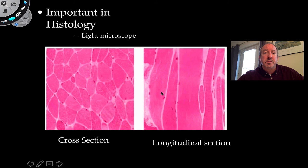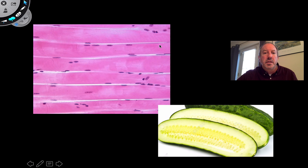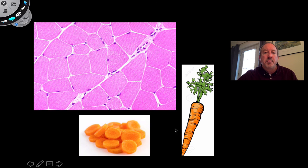In histology, if you're looking at muscle tissue, you need to know which cut you're viewing. A cross-section of muscle looks very different from a longitudinal section of the same muscle. This is a longitudinal cut of what appears to be skeletal muscle — I can see striations and it's multinucleated. Similarly, you can cut a carrot transversely to make many cross sections. Being aware of the sectional view is essential for accurate analysis.